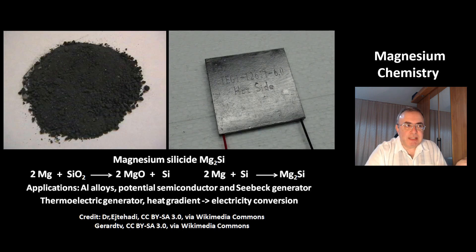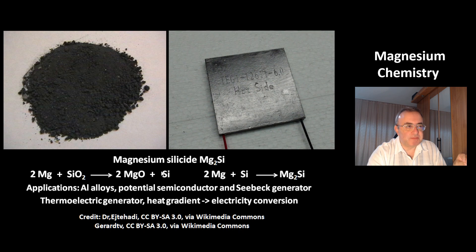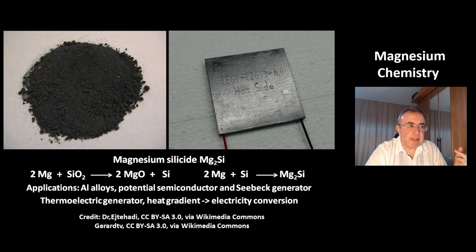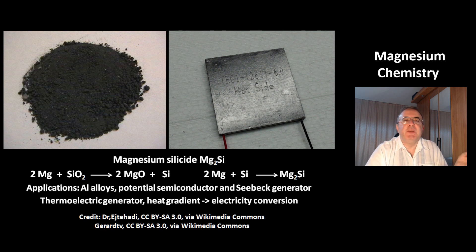This is magnesium silicide, Mg₂Si. It can be made from silicon dioxide with excess magnesium — the first step gives silicon element, and the second step gives magnesium silicide. It has multiple applications, for example in aluminum alloys. It has semiconductor properties and can be used as a Seebeck generator — a thermoelectric generator which converts a heat gradient to electricity.